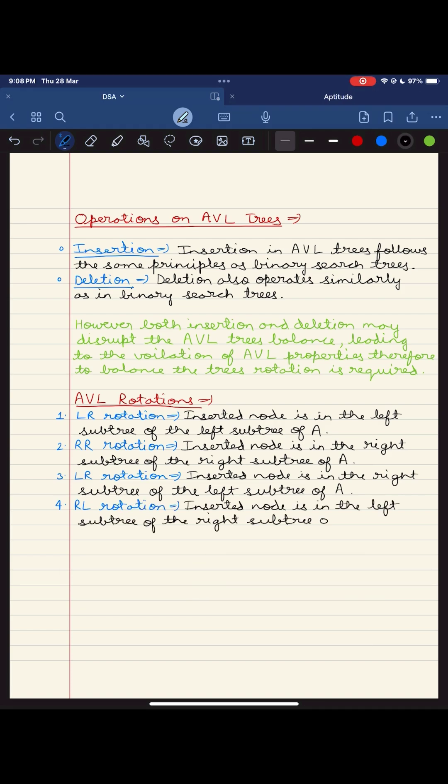Sometimes we need a mix of both. That's where LR and RL rotations come in. They're like dance combos, making sure our tree stays steady. With these simple steps, our AVL tree keeps our data in harmony, making sure everything stays organized and easy to find.